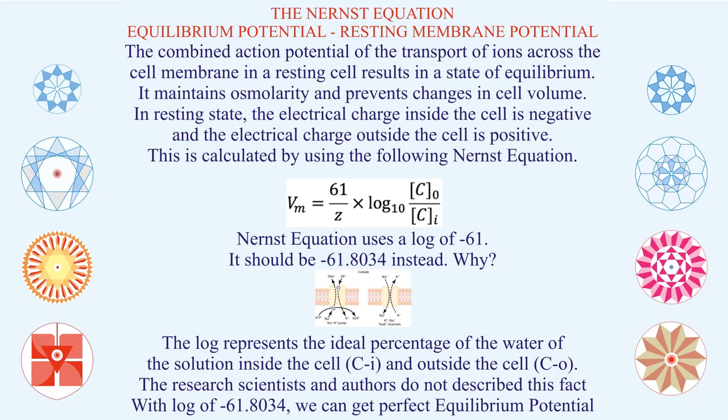In a resting state, the electrical charge inside the cell is negative and outside is positive, and this is calculated by following the Nernst equation. In this particular formula, the number I would like to highlight is 61. Unfortunately, no research scientists or authors explain why log of -61 has been used. I know that instead of using a log of -61, it should have been 61.8034. This also gave me the idea that perhaps the water content is responsible for the solution inside and outside the cell, which is calculated as a constant — water does not change, whereas sodium and potassium ion concentration can change, resulting in equilibrium or action potential.